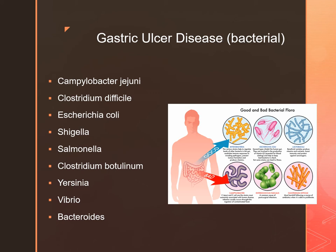Clostridium difficile, or C. diff, has been placed at the top of the CDC's antimicrobial resistance urgent threat list as of 2013. Current estimates are about 250,000 infections annually, resulting in about 14,000 deaths. C. diff is considered exclusively a healthcare-associated infection, typically only found in individuals who have had long-term antibiotic therapy.